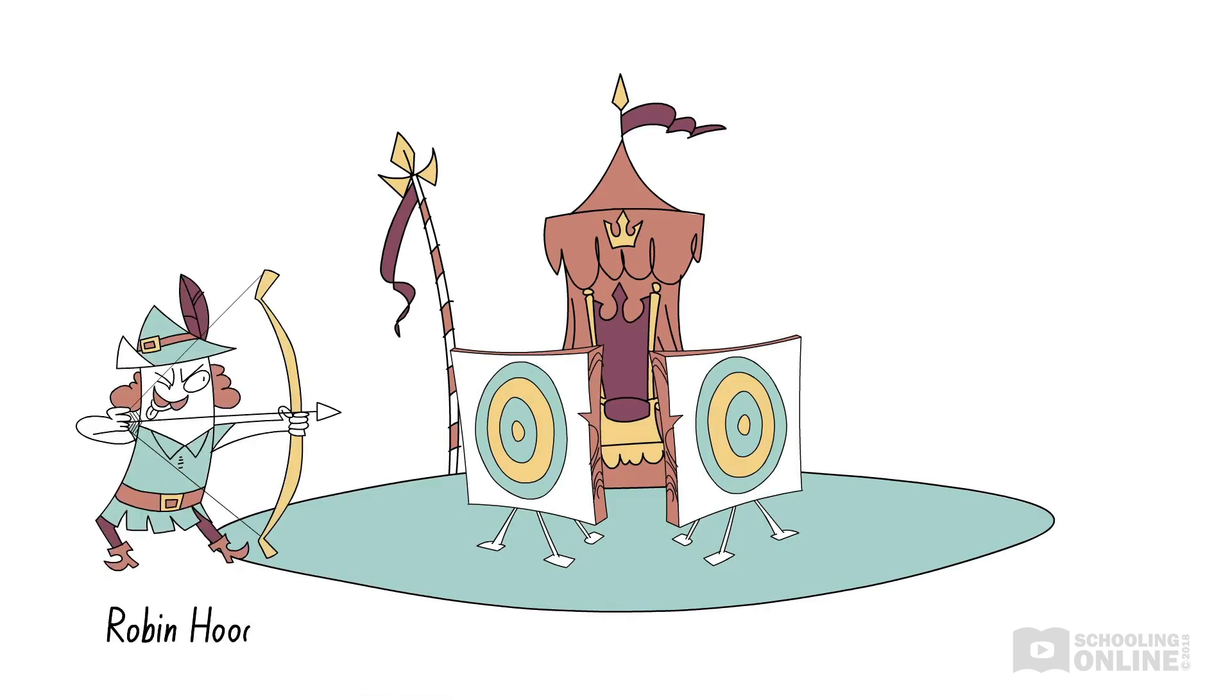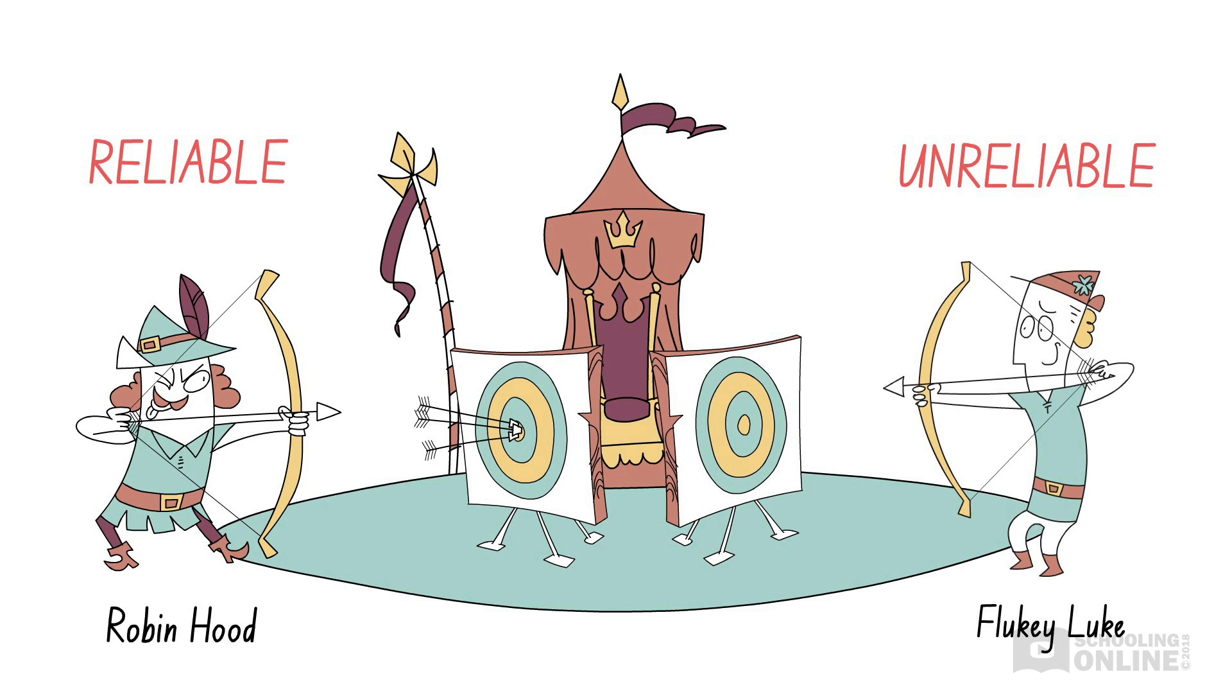For example, Robin Hood is a reliable archer since his arrows consistently land close to each other. Meanwhile, Fluky Luke is not a reliable archer since his arrows go all over the place.